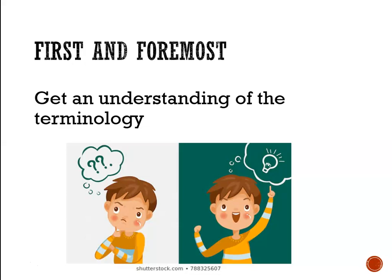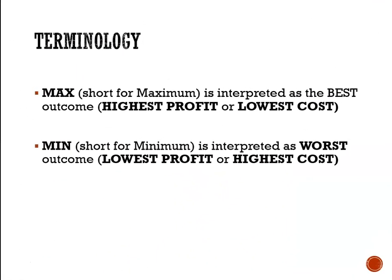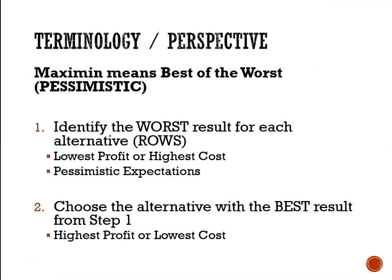First and foremost, it's important to understand the terminology. Max, short for maximum, is interpreted as being the best outcome — highest profit or lowest cost. Min, short for minimum, is interpreted as being the worst outcome — lowest profit or highest cost. Putting the two words together, we get Maximin: max of the min, best of the worst.